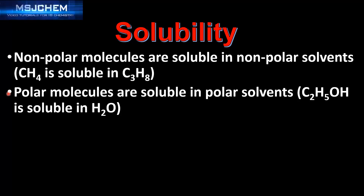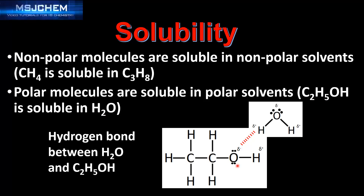Polar molecules are soluble in polar solvents. For example, C2H5OH which is ethanol is soluble in H2O which is water. Ethanol has an OH group which means it can form hydrogen bonds between itself and a water molecule, and this is the reason for ethanol's solubility in water.